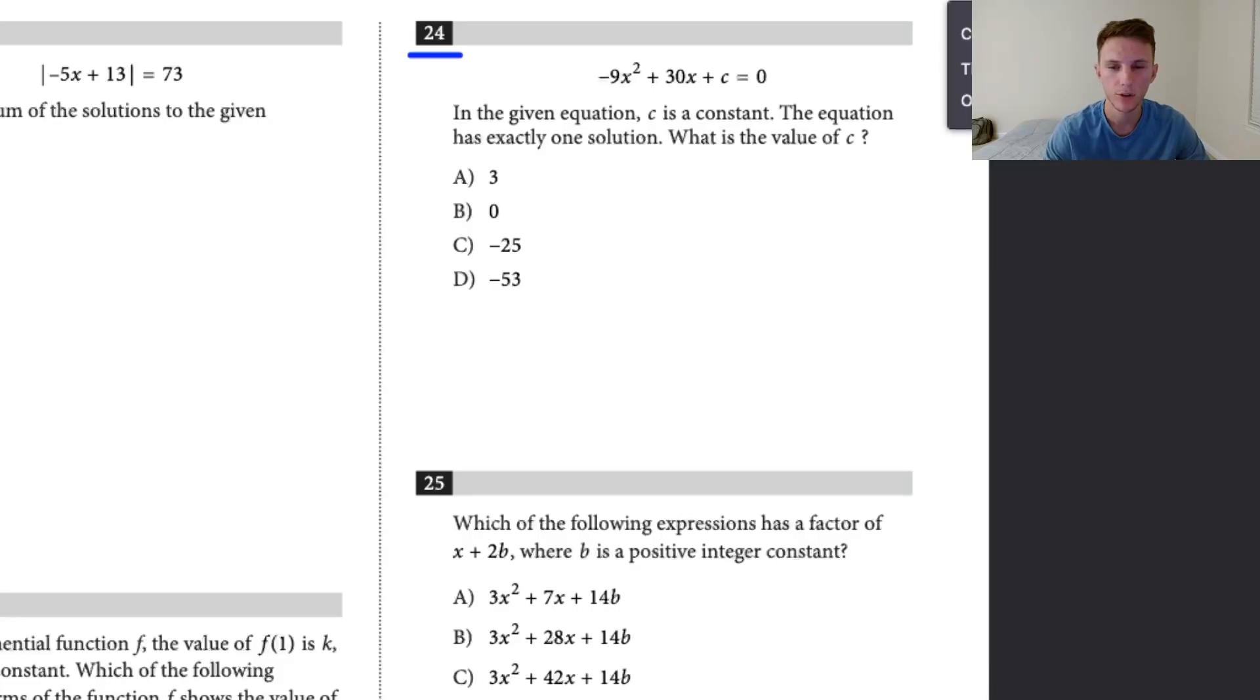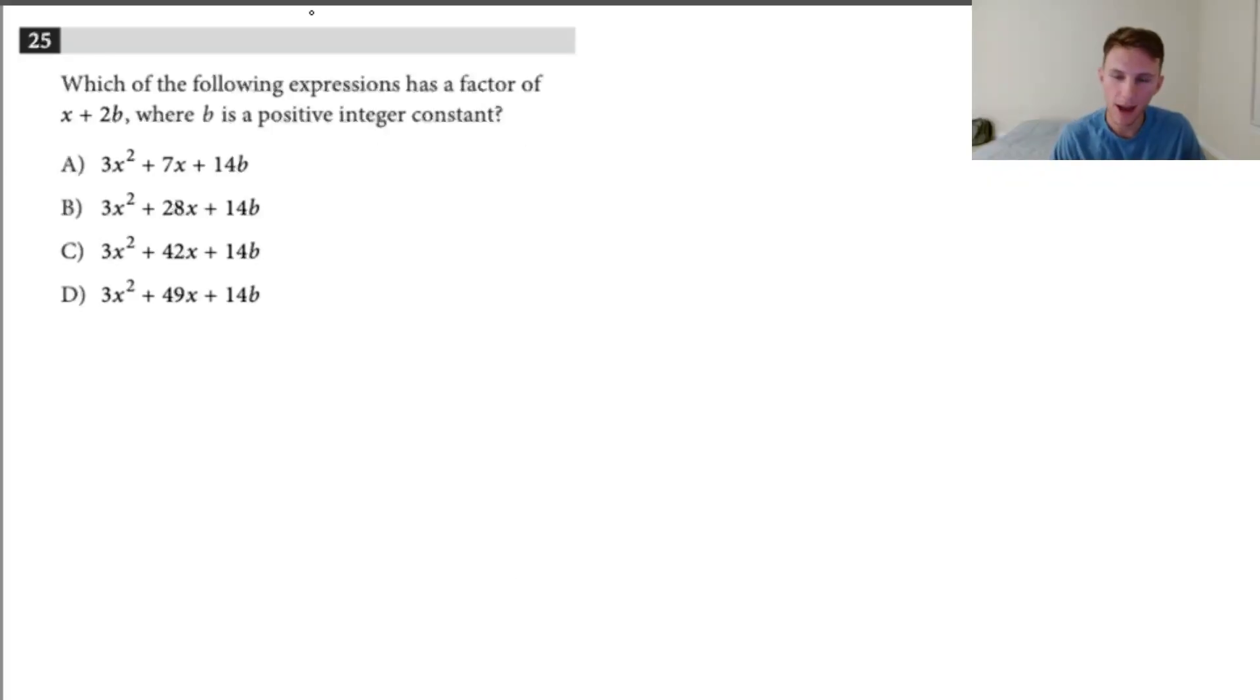Try number 24 here. This one's really similar to the last one we worked out, and this will get you some good reps on these kind of problems. So by now, you should start to realize that there's a pattern with these constant questions. They really like these quadratic questions. This is a quadratic question because it's dealing with factors, and you can tell the answers are in quadratic form. So be on the lookout for these.